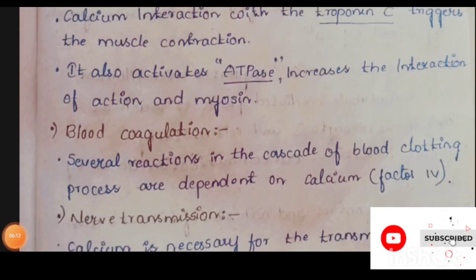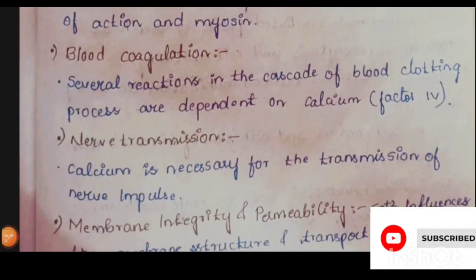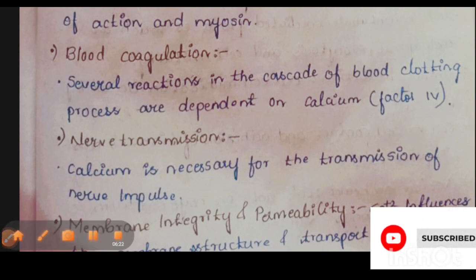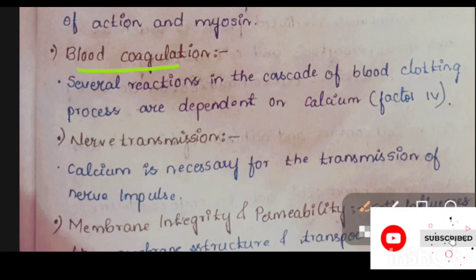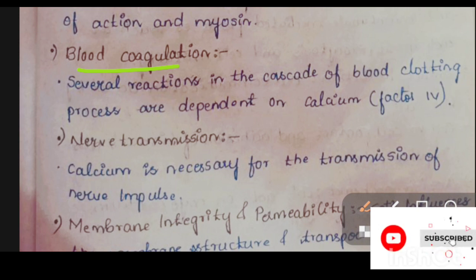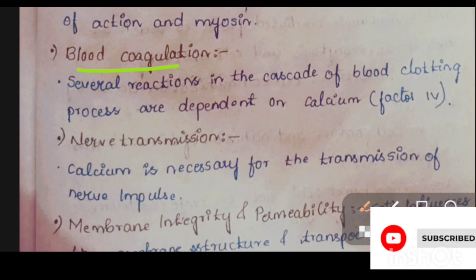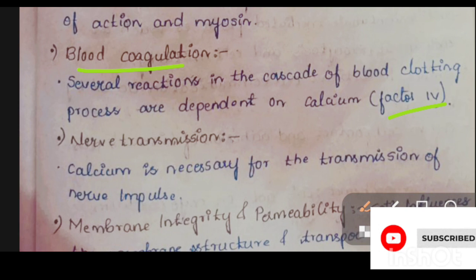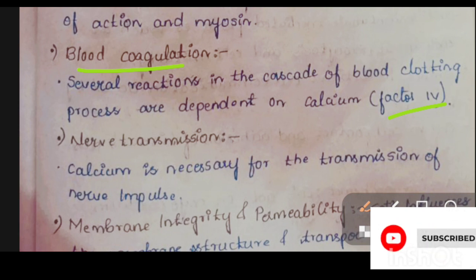The third function of calcium is blood coagulation. Blood coagulation is a process where, whenever an injury or wound occurs, cascade reactions take place for blood clotting. Calcium is one of the most important factors in that process — it is factor four. Several reactions in the cascade of blood coagulation are dependent on calcium.